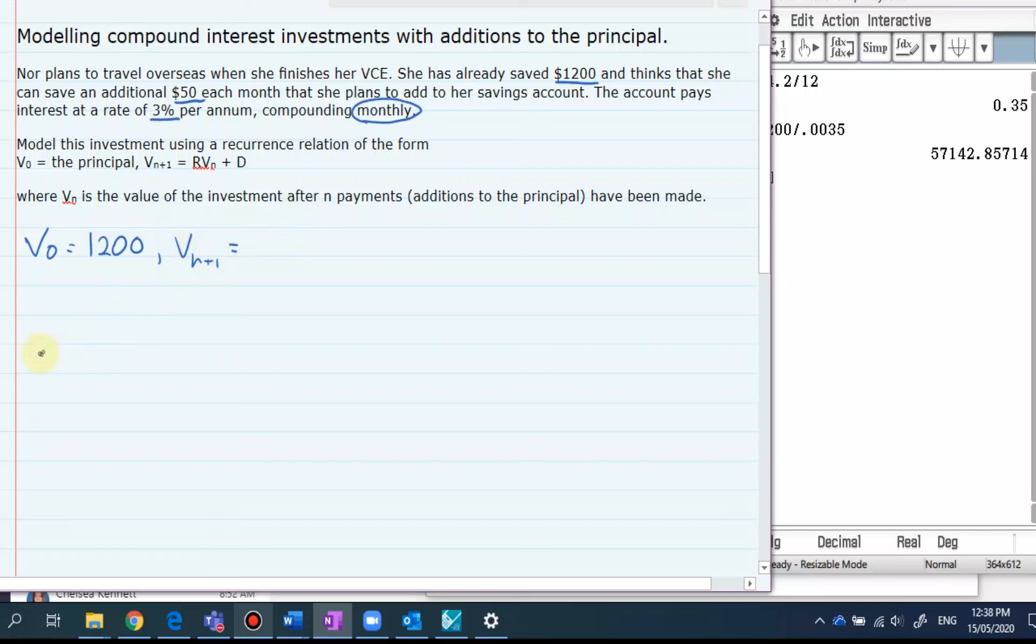Now R is going to be our interest rate divided by 12 because it's applied monthly over 100. Okay so hopefully we know that 3 over 12 is the same as a quarter or 0.25. That's all over 100 which is 0.0025.